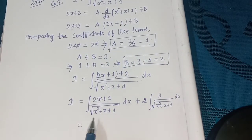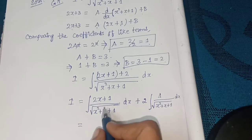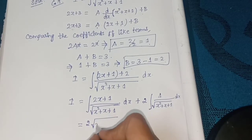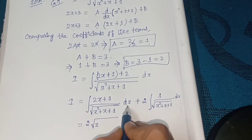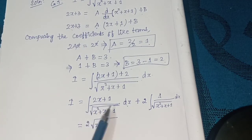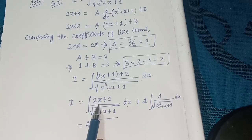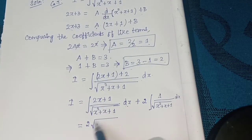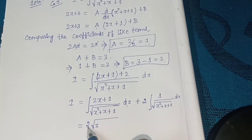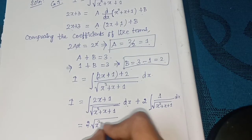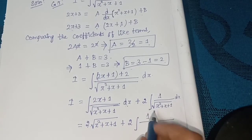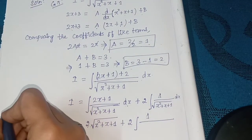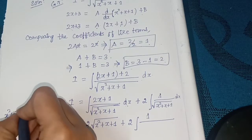Splitting the integral: I = integral of (2x + 1) / √(x² + x + 1) dx plus 2 times integral of 1 / √(x² + x + 1) dx. The first part gives 2√(x² + x + 1).